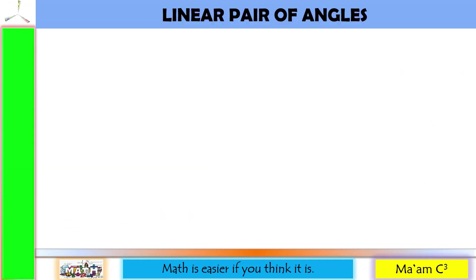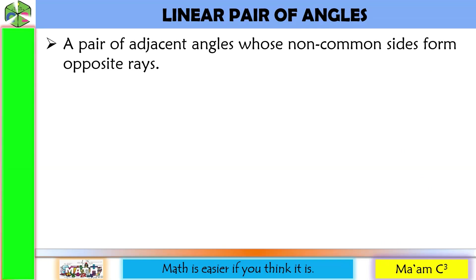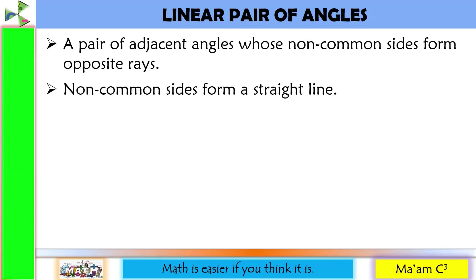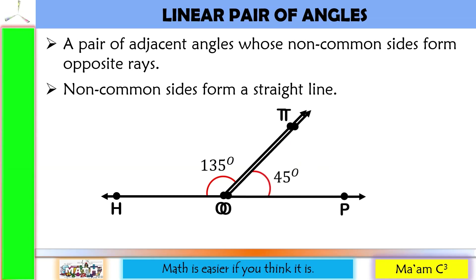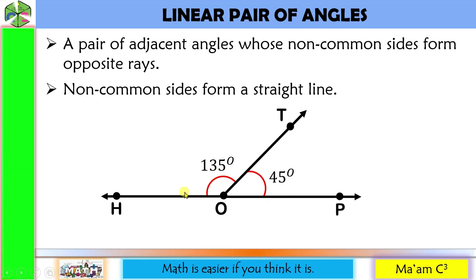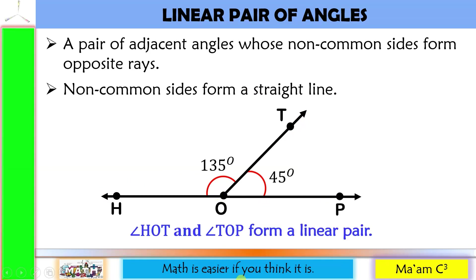The last pair is a linear pair of angles — a pair of adjacent angles whose non-common sides form opposite rays, and these non-common sides form a straight line. For example, when combined, these two angles share a common ray, ray OT, and a common vertex, point O. These are their non-common sides, and notice that these non-common sides form a straight line. Therefore, angle HOT and angle TOP form a linear pair.